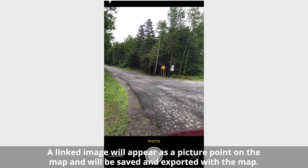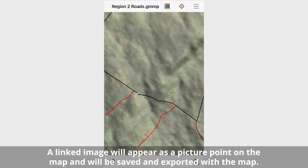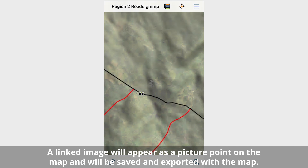A long tap gesture anywhere on the map will launch the device camera to allow an image to be captured and linked to the map at the GPS location.